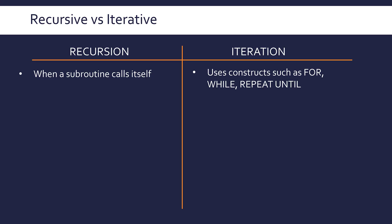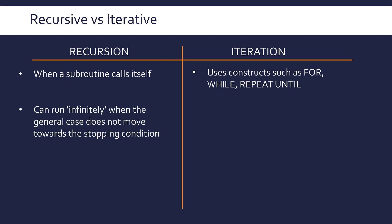You might have a combination sometimes, but within a recursive subroutine it really should not have any iteration. Both have problems, of course. Recursive solutions can run infinitely — I've put that in quotes because it's not truly infinite, it's going to crash eventually. It can be this infinite case where you don't actually have a general case which moves you towards the stopping condition.